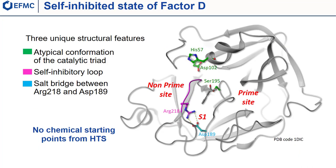Factor D circulates in blood in its self-inhibited form, which is characterized by three unique structural features with respect to the serine protease family: an atypical conformation of the catalytic triad, here reported in green; the presence of a self-inhibitory loop, reported in purple, which renders the non-prime site used by many protease inhibitors inaccessible to ligand binding; and a unique salt bridge between residues arginine 218 and aspartate 189 at the bottom of the S1 pocket. The proteolytic activity of factor D requires a conformational change which occurs upon binding to the complex C3b–factor B.